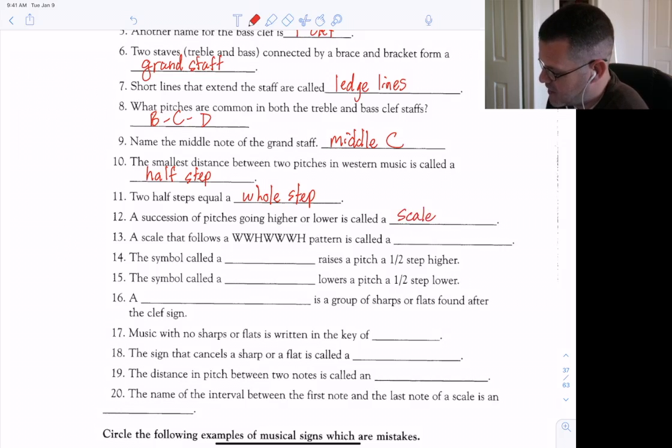A scale that follows the whole, whole, half, whole, whole, whole, half pattern is called a major scale.